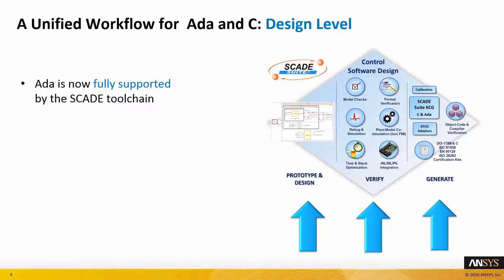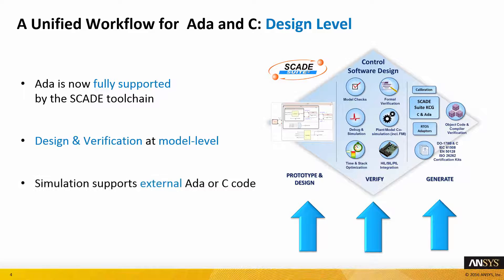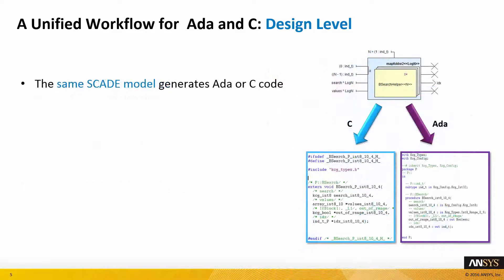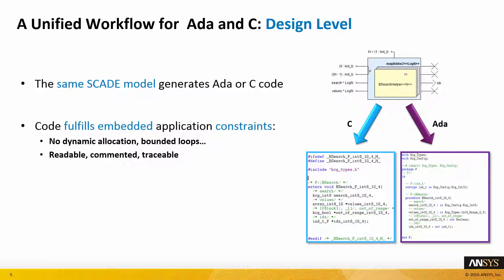The SCADE tool chain now fully supports ADA as a target language. Principles are the same as for the already successful C-based tool chain, where most of the verifications are done at model level during the design phase. The code is produced by the certified code generator, which guarantees the correctness of the behavior. Simulation of the model uses this ADA-generated code. An external or legacy ADA code can be used as well. The greatest benefits of this solution are the certified code generation for ADA, and the possibility to have two target languages for the same input model. In both cases, the generated code fulfills embedded code constraints such as no dynamic allocation, bounded loops, etc. The generated code is readable, commented, and traceable. Code reviews are no longer necessary thanks to the certification of the code generator.